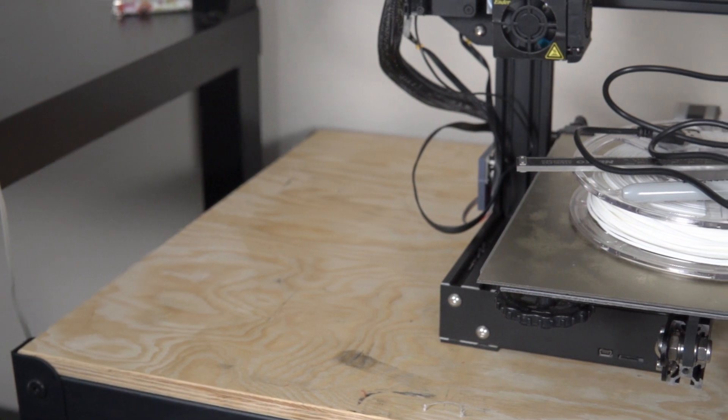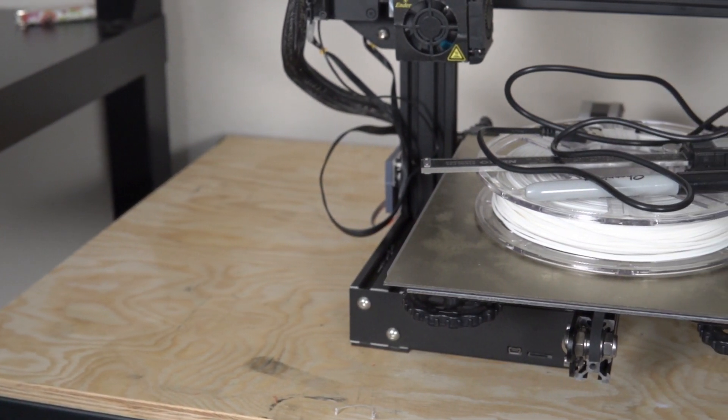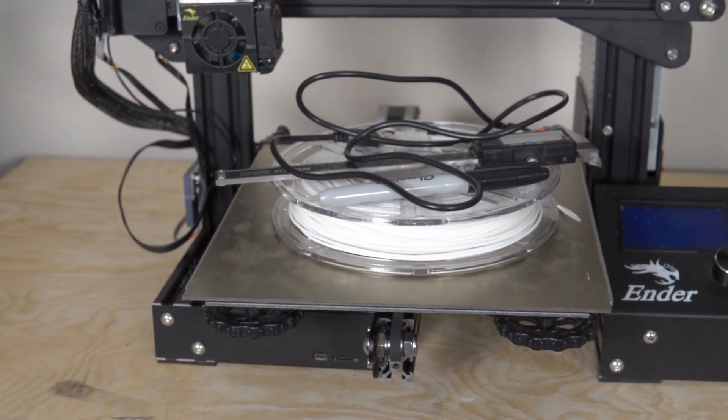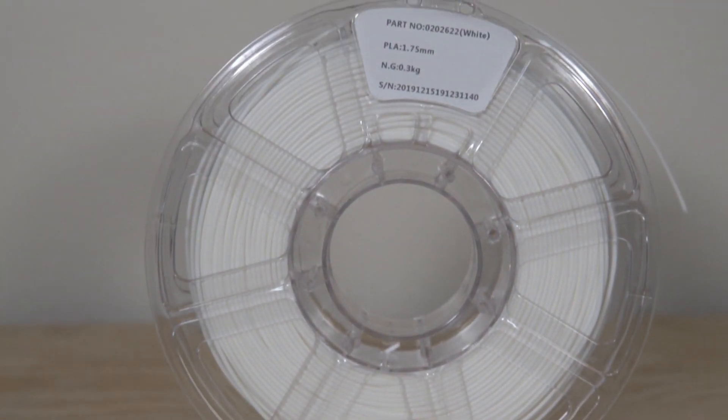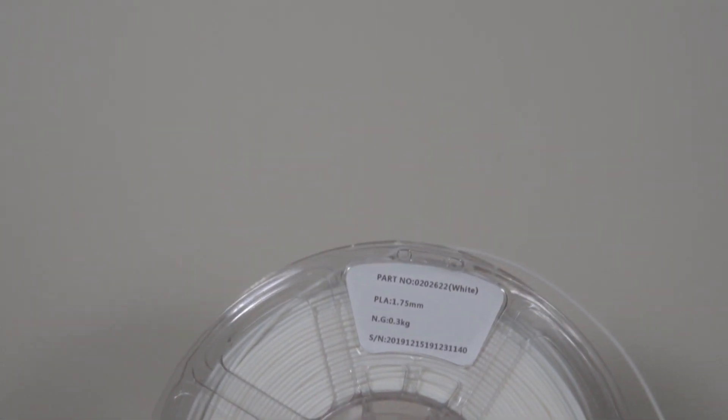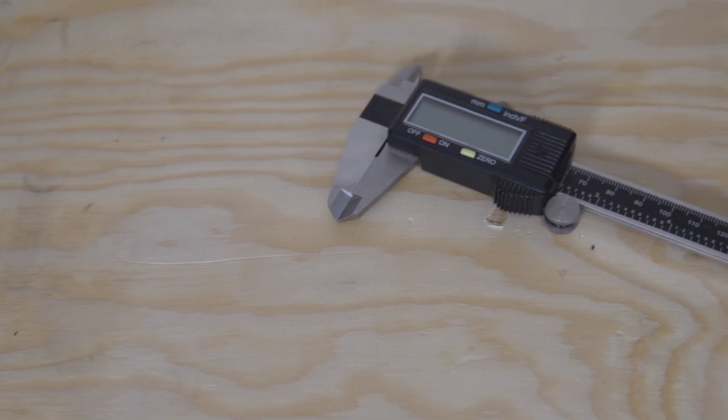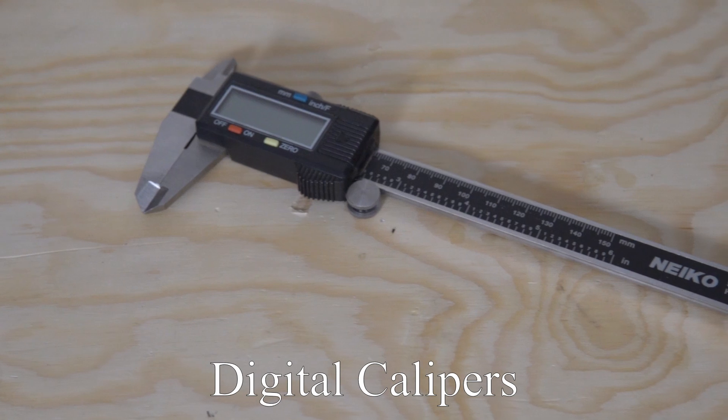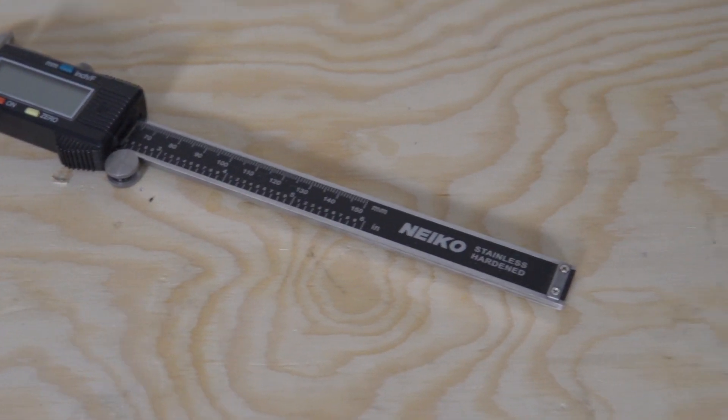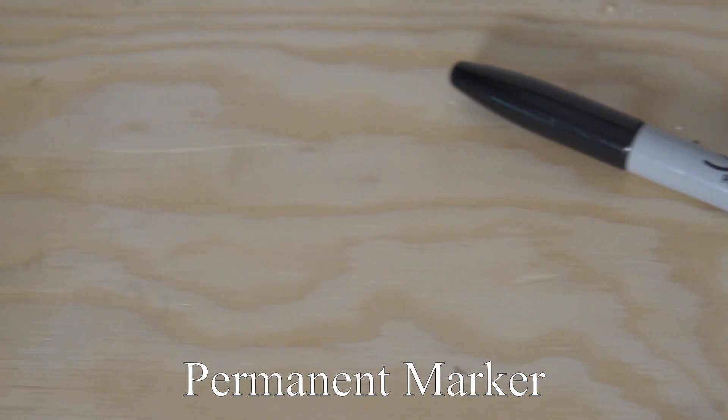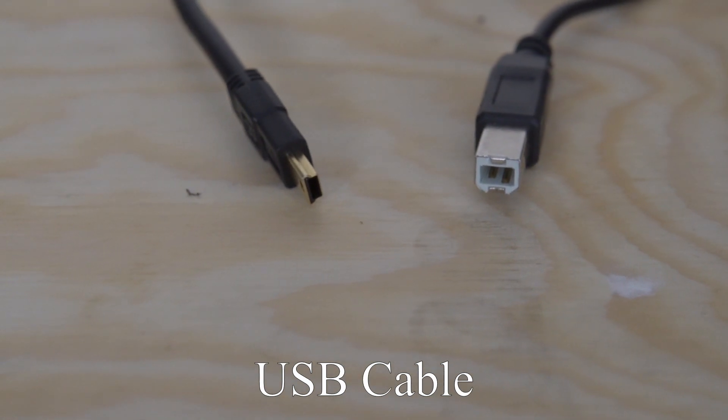Let's go over the few things you'll need to actually measure and calibrate e-steps on your 3D printer. For starters, we need some filament. I highly recommend a light-colored PLA material that's easy to mark with a permanent marker. We also need digital calipers to measure the extrusion length, a permanent marker to make markings on the filament, and a USB cable to interface the printer with our computer.